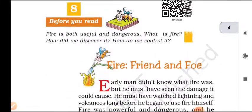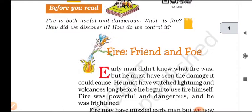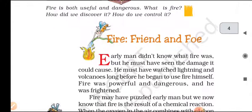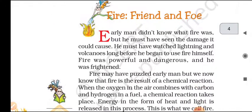Before you read: Fire is both useful and dangerous. What is fire? How did we discover it? How do we control it? Now let's read the lesson 'Fire Friend and Foe' — foe meaning enemy.